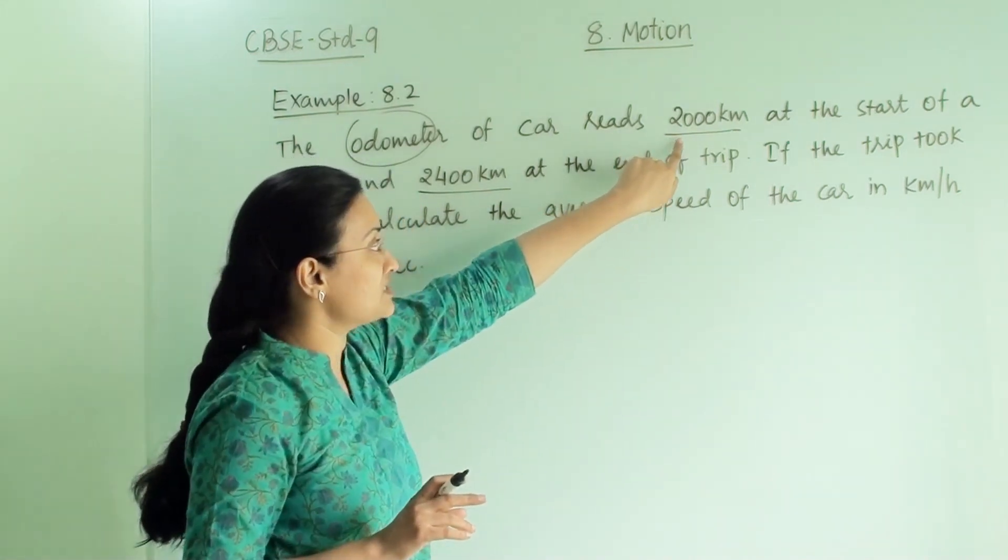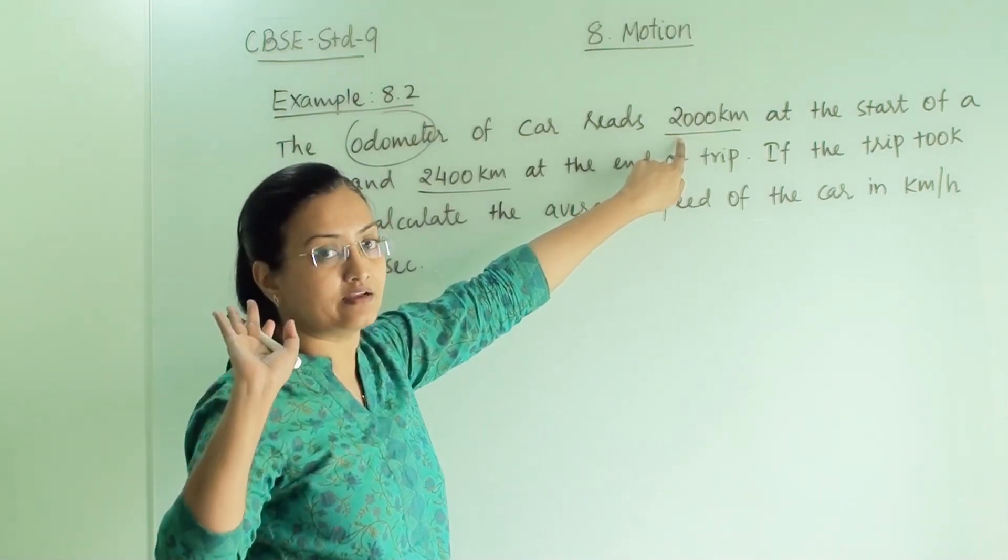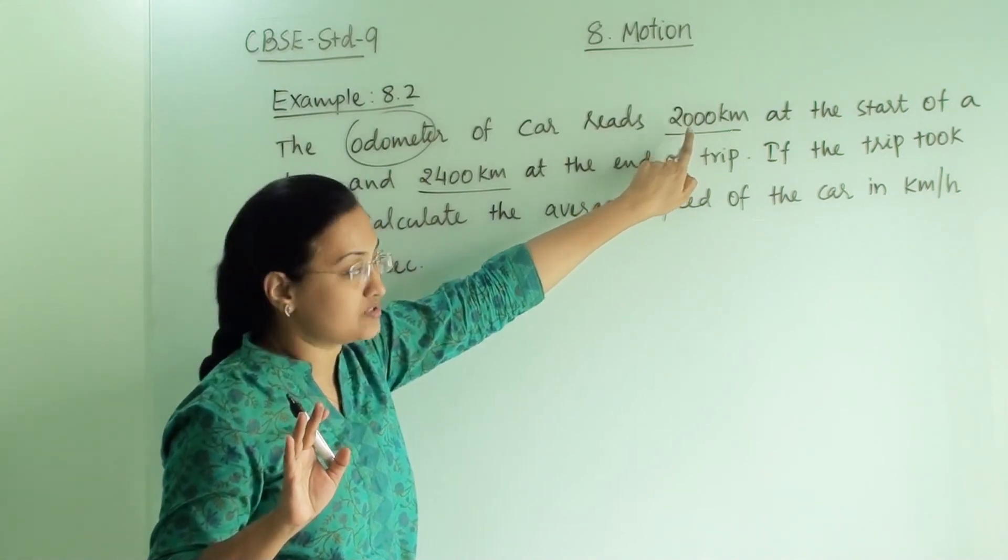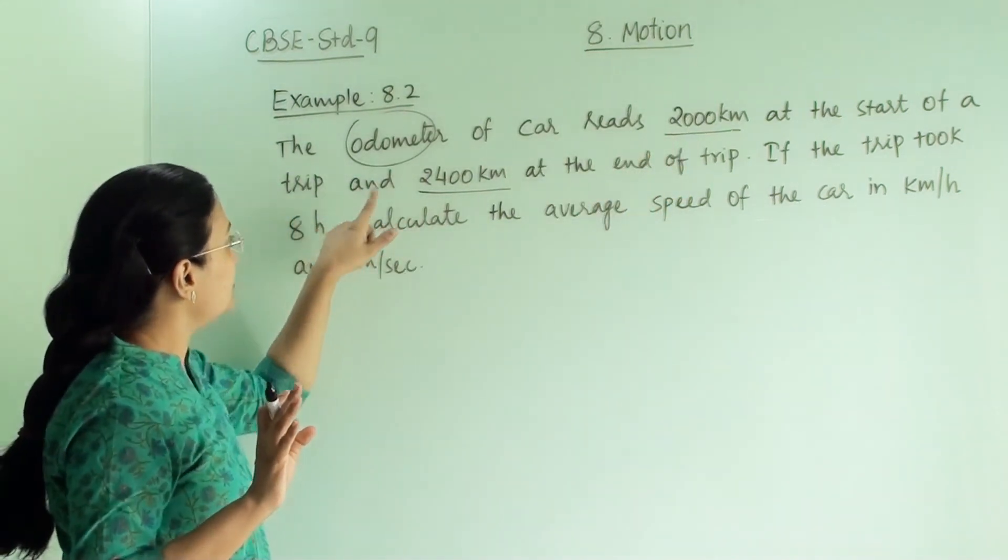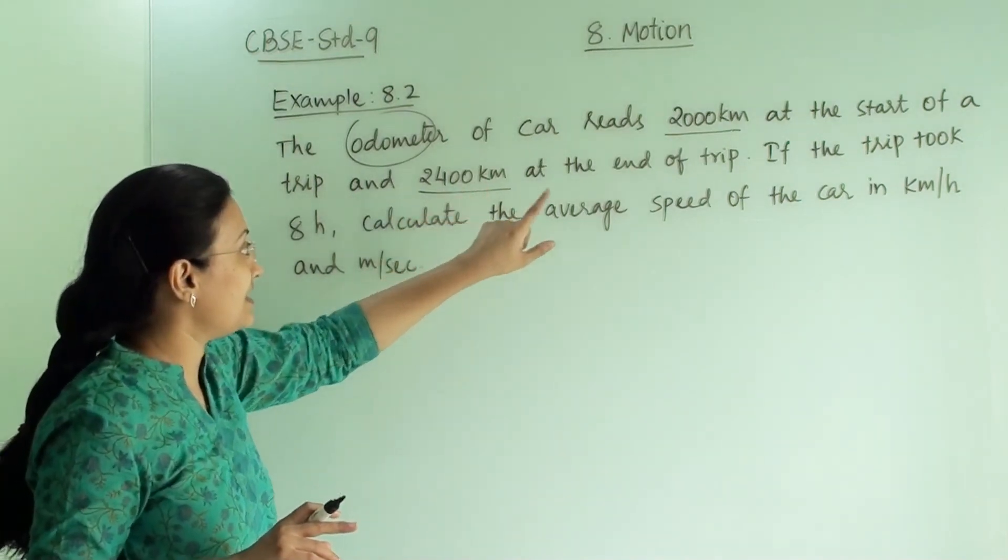So it will show 2000 because the car has already covered 2000 km earlier in previous journeys. Now when the trip has started it was showing 2000. After the trip ends it shows 2400 km.